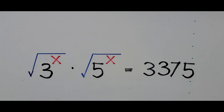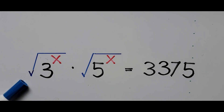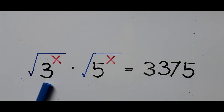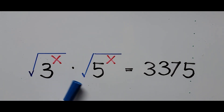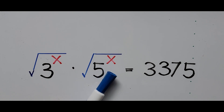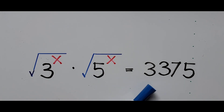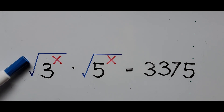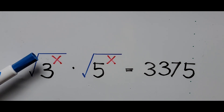Hello everyone. We have a radical exponential equation on the board: the square root of 3 to the power x, times the square root of 5 to the power x, equals 3375. And we're going to find the value of x.